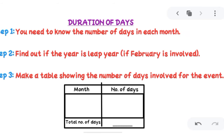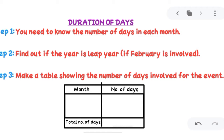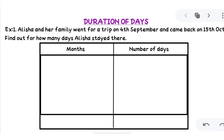For this we have a few steps. The first step is you need to know the number of days in each month — yani harik mahine mein kitne kitne din hote hain yaa maaloum hona chahiye — like May has 31 days but February has 28 days. Step two is to find out if the year is a leap year, if February is involved, because in a leap year February has 29 days instead of 28. Step three is to make a table showing the number of days involved for the event.